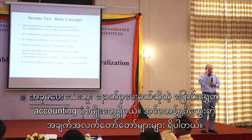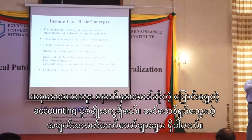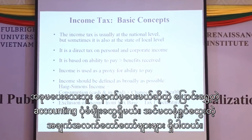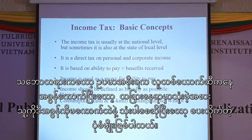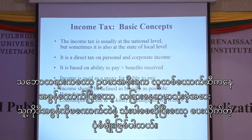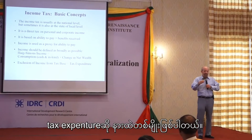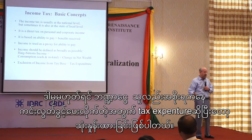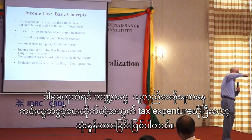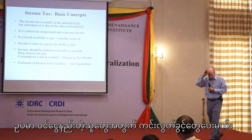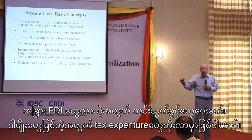Something to think about: when you start excluding different things from income — exemptions, exclusions, deferrals — all sorts of things that are not taxed — that's just like the government spending money. Instead of collecting the money from you and then spending it, it lets you keep the money to spend. We have a special name for this: tax expenditure. You're actually spending money by not collecting it — you're letting the taxpayer spend the money instead of collecting it and then dividing through the budget.